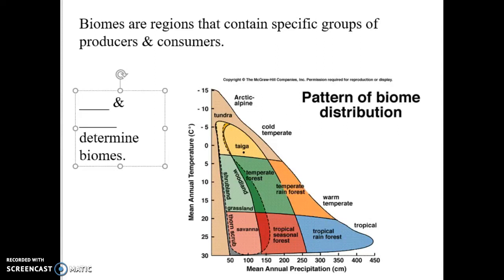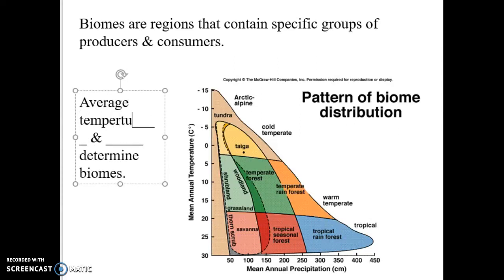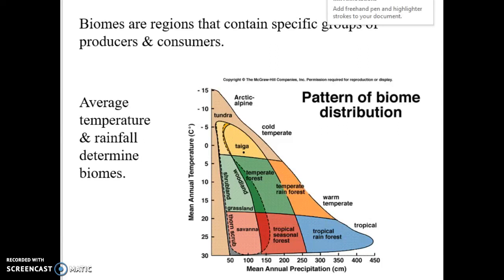Biomes are determined primarily by average temperature and rainfall. Temperature and rainfall, that's what really determines your biome. Temperature can be influenced by solar radiation, landforms, proximity to the ocean, all those things we were mentioning before. But these two variables are the key variables for biome distribution. How much rain do you get? And what's your average temperature across a year?